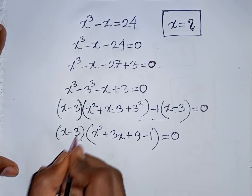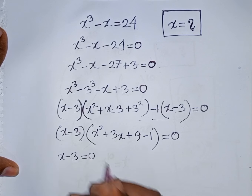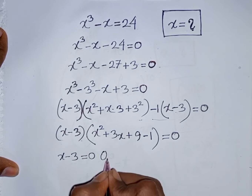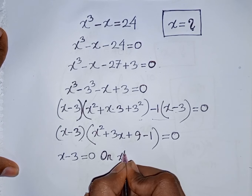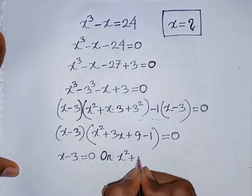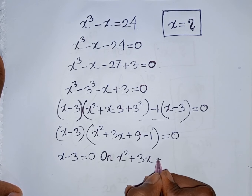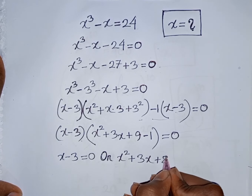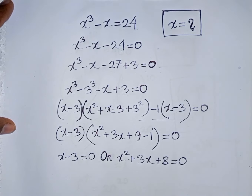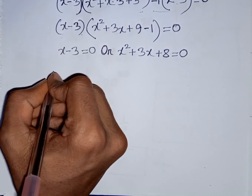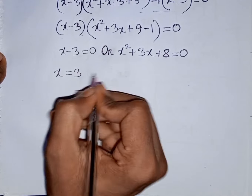Now we can write x - 3 = 0. Taking -3 to the right side gives x = 3.